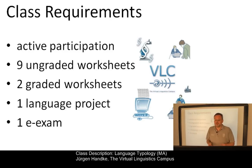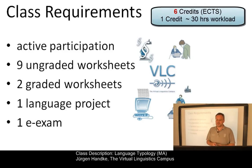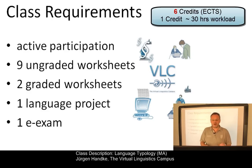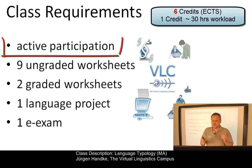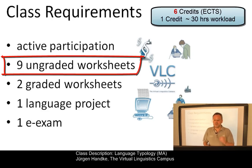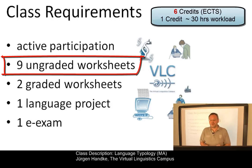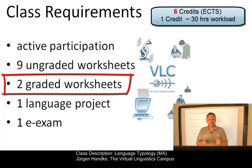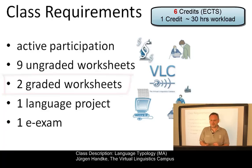Finally, you want to know what you have to do in order to get the six class credits, where one credit is the equivalent of about 30 hours of workload. We want you to actively participate — that's a prerequisite. You have to submit nine ungraded worksheets, which show us that you've dealt with the online content prior to each in-class meeting. We also want you to do two graded worksheets, which count 20% of the overall grade.